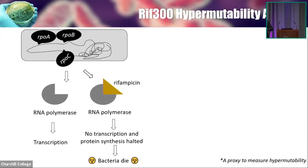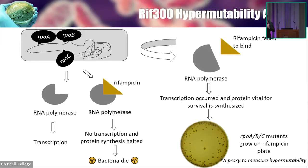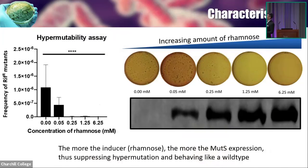However, if there is any hypermutation that accidentally — and also luckily — occurs at the site of rpoA, B, or C, then the structure of the RNA polymerase changes and rifampicin cannot bind successfully. Then transcription occurs, protein synthesis happens, and the bacteria can grow happily on the rifampicin plate. Looking at this: for my hypermutability assay, when I increase the amount of rhamnose, the mutant frequency decreases because there is more MutS expression. So I can actually suppress the hypermutation so that my bacteria behave like a wild type and are not able to grow on the rifampicin plate.